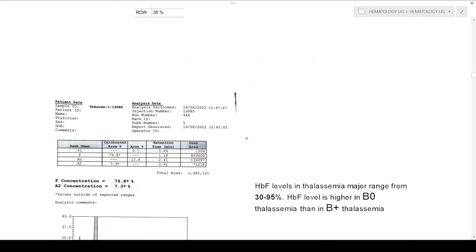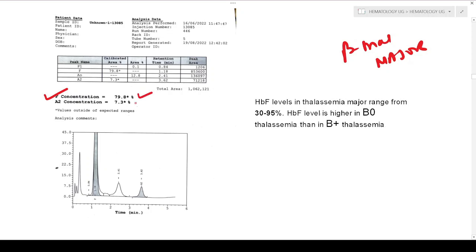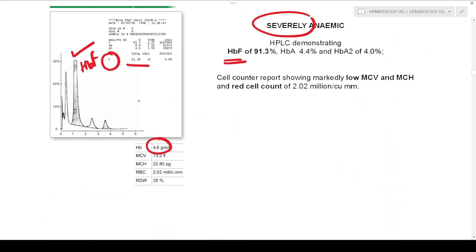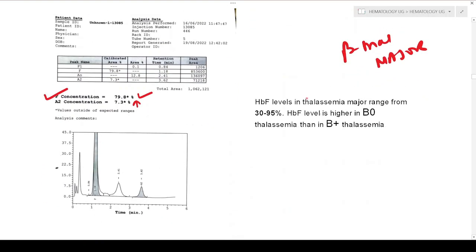This is a beta thalassemia major case diagnosed at our institute. The HbF concentration is approximately 80% — usually they say more than 85%, but around 80% is also acceptable. The A2 level is also increased, but as mentioned, in beta thalassemia major the A2 level can decrease, be normal, or be increased. The HbF levels will always be very high. HbF in thalassemia major can range from 30 to 95%, but usually it is more than 80 to 85%.